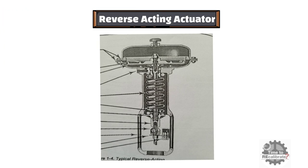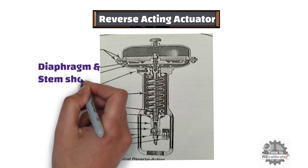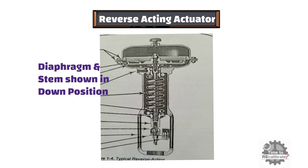As you can see from the picture of Reverse Acting Actuator, all the parts are same as the Direct Acting Actuator except diaphragm and stem. In Reverse Acting Actuator, diaphragm and stem must be in downward position. This is the only difference between Direct Acting Actuator and Reverse Acting Actuator.